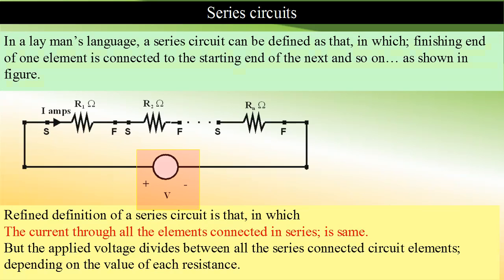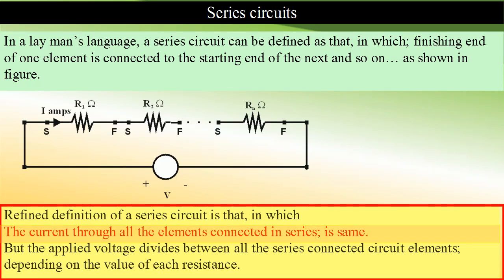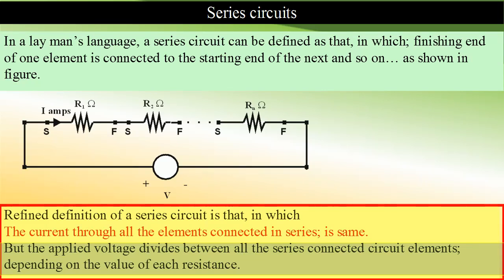The first starting end and the last finishing end are connected across a voltage source as shown in the figure. A refined definition is that in a series circuit, the current through all the circuit elements connected in series will be the same, but the applied voltage divides between all series-connected elements depending on the value of each resistance.